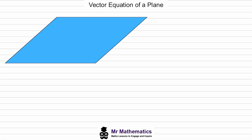In this video we're going to look at the vector equation of a plane. In mathematics, a plane is a flat two-dimensional surface that extends infinitely in all directions. To find the vector equation of a plane means to describe the location of any point on that plane using an x, y, and z coordinate.